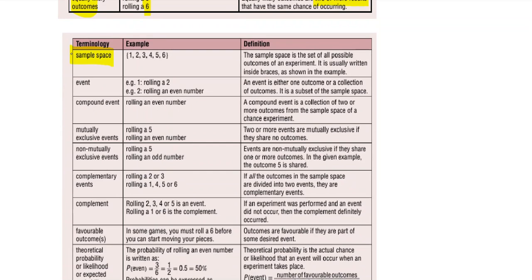Sample space is what we call the list or set of all possible outcomes in your experiment. There is a special way we write it — we use curly brackets on the ends, and inside you list every outcome you could possibly get. On a dice, that's one, two, three, four, five, and six.